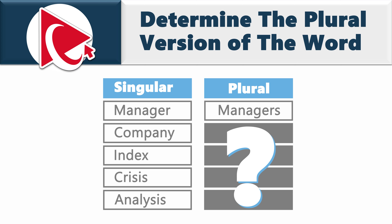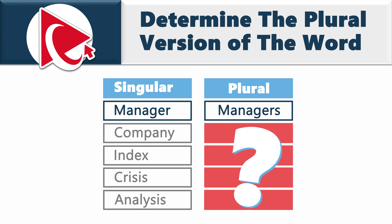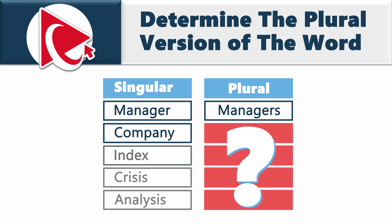One pair is present: manager and managers. For the other words, you need to build the pairs. The other words are company, index, crisis, and analysis.